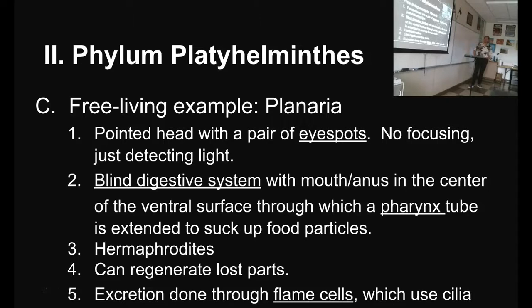The pharynx tube — these guys are interesting. They don't take bites; they don't have jaws. They have a sucking tube called a pharynx — a sucking tube comes out of their mouth and sucks up what they want to eat. They are hermaphroditic — they have both gonads, but they don't fertilize themselves; they fertilize each other. Both of them wind up getting pregnant after a sexual encounter instead of just one.